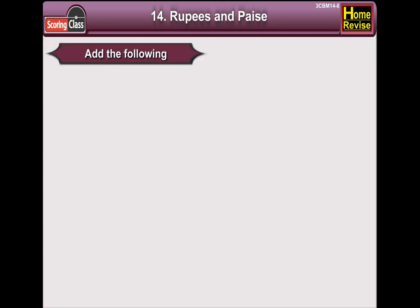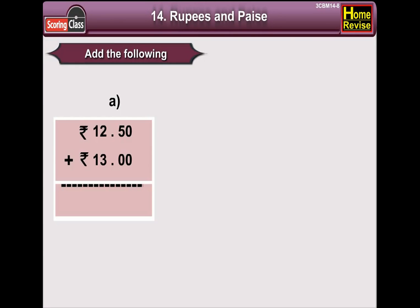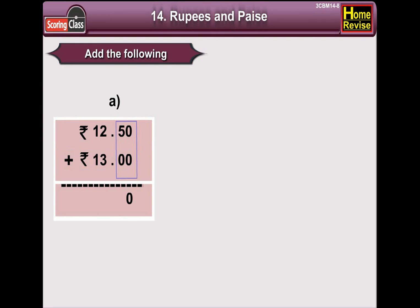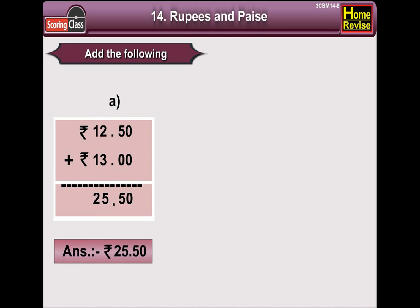Add the following. A: Rupees 12, 50 paisa plus rupees 13. Now, 0 plus 0 is 0, 5 plus 0 is 5, 2 plus 3 is 5, 1 plus 1 is 2. So the answer is rupees 25, 50 paisa.